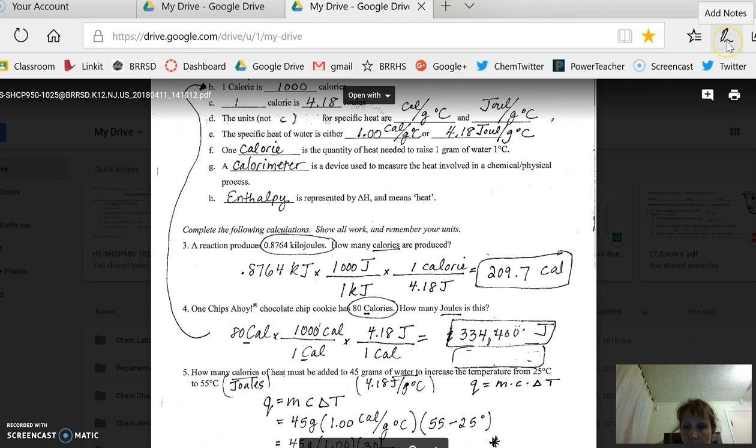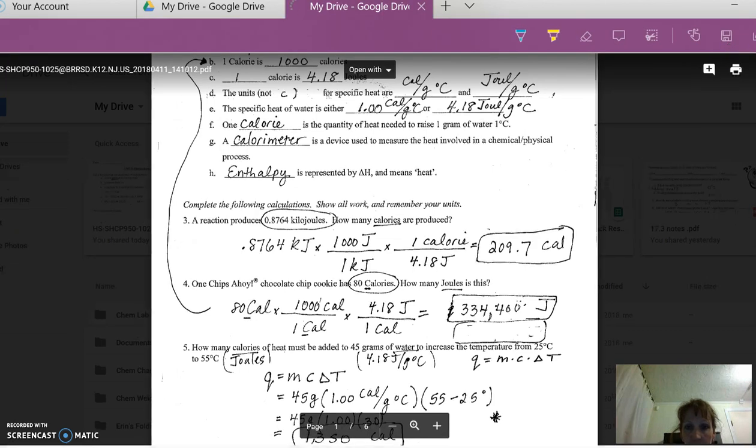Problems three and four are conversion problems. See the conversion factor right here? This is your conversion factor and this is your conversion factor. So you do need to know that 1,000 joules is equal to one kilojoule and one little calorie is equal to 4.18 joules.